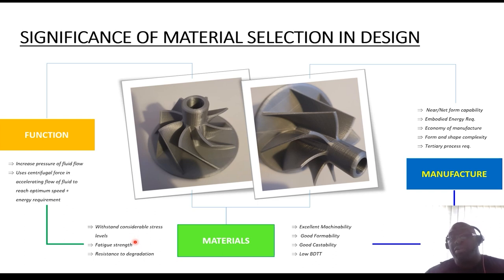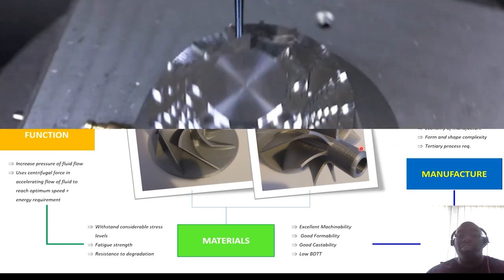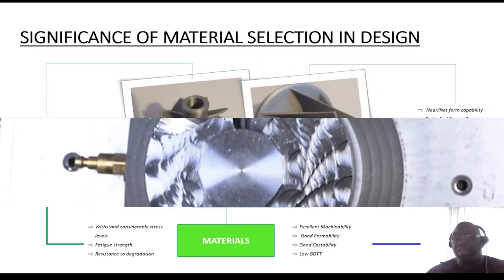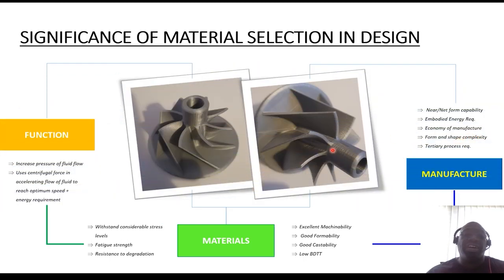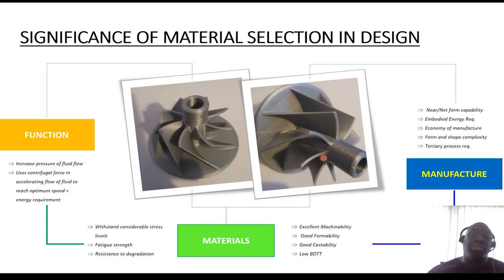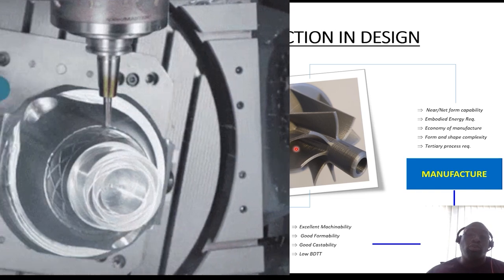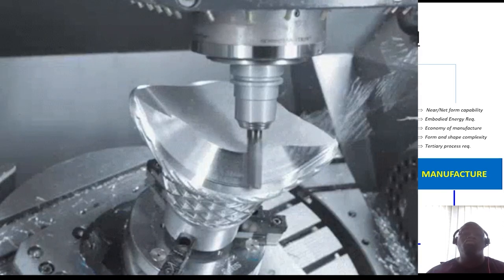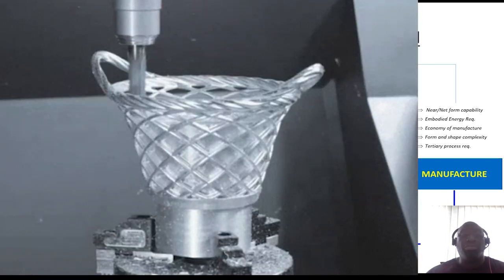What is the manufacturing process's capability of achieving the near-net form of the component? What about the embedded energy requirements — how much energy is required to yield this form? Economy of manufacture: if you need to manufacture a bespoke or one-off part, or in batches from 10 up to about 1,000, anything beyond 1,000 goes into medium to high-volume manufacturing. What are the cost implications — not just for the part itself, but also how much it would cost to run and maintain the machinery to produce these parts?